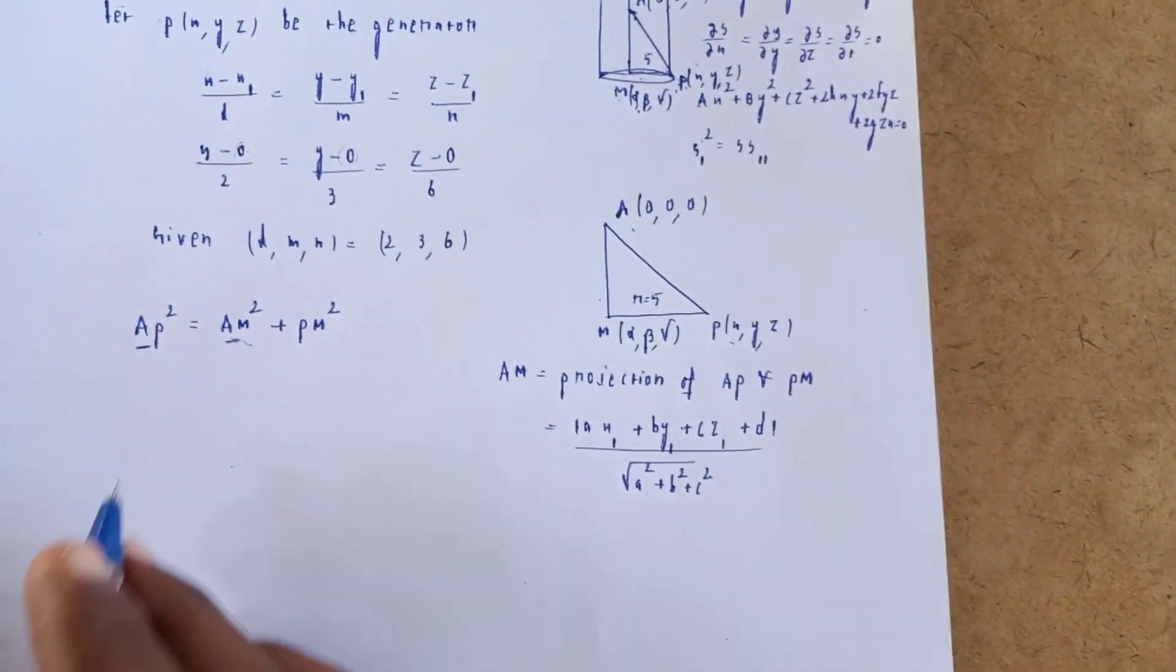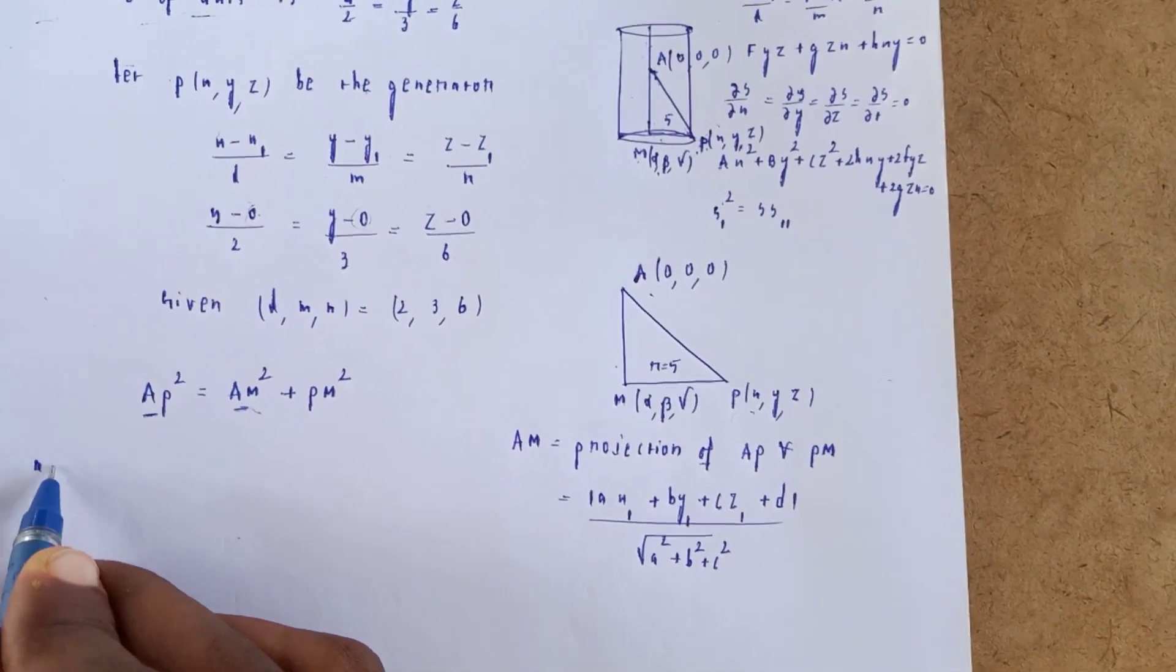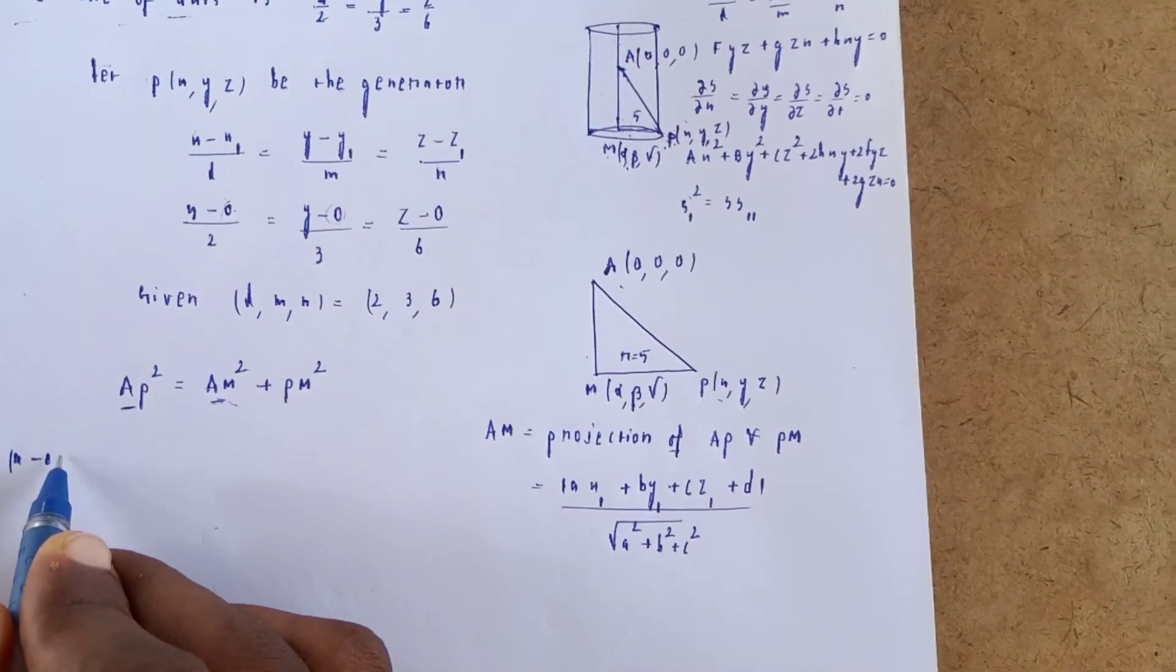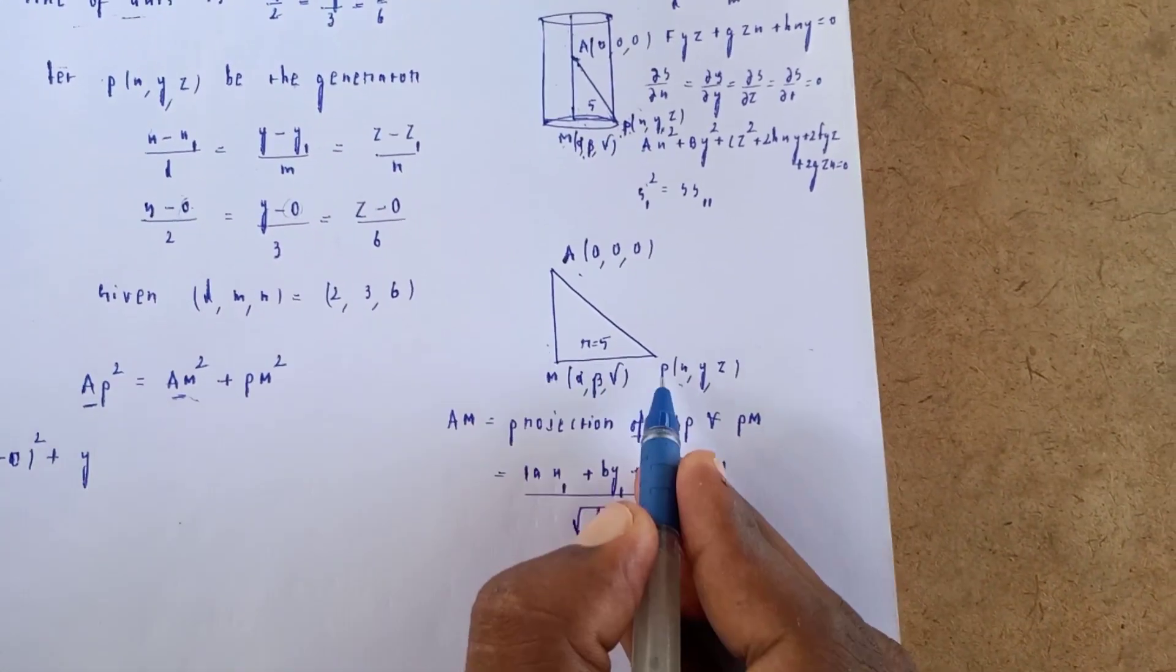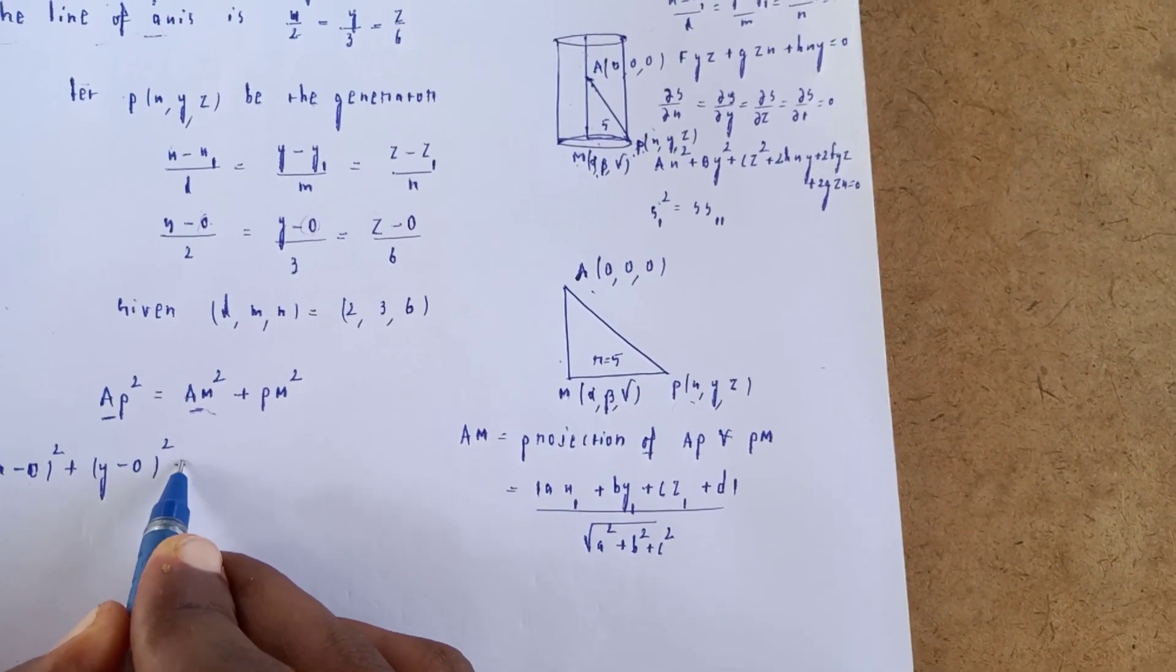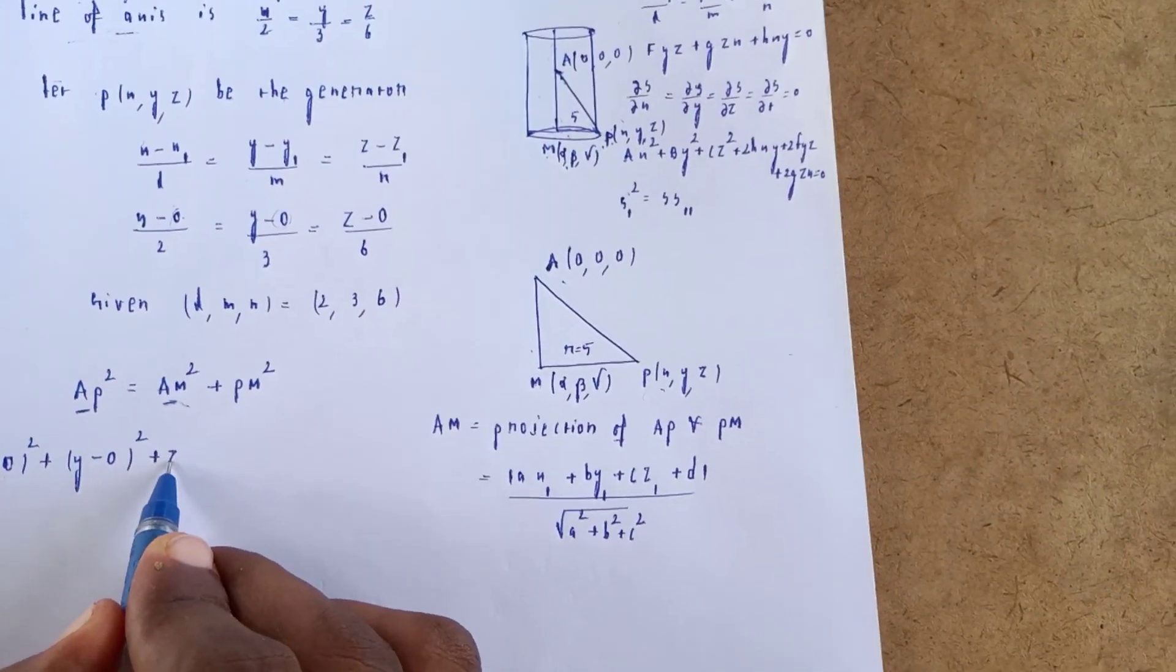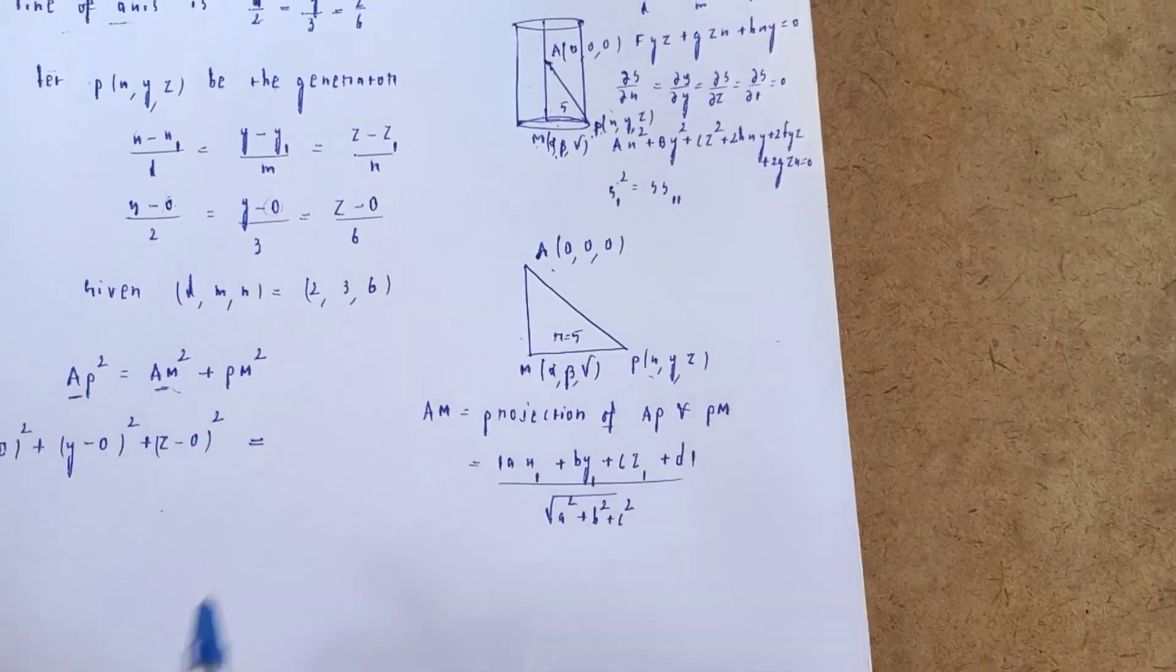AP distance is √[(x - 0)² + (y - 0)² + (z - 0)²] = √(x² + y² + z²).